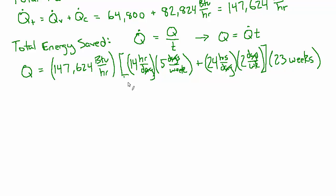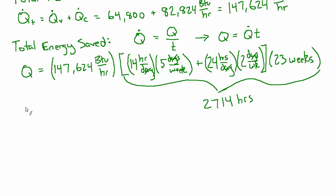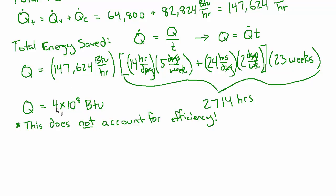Multiplying 2,714 hours per year by 147,624 BTUs per hour gives approximately Q equals 4 times 10 to the 8th BTUs per year saved. One important note: this does not yet account for furnace efficiency. That's how much less energy is lost from the building, but in terms of fuel savings the story is even better because the furnace is not 100% efficient.